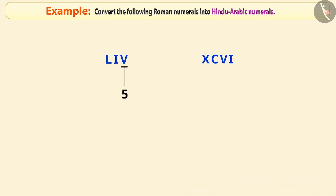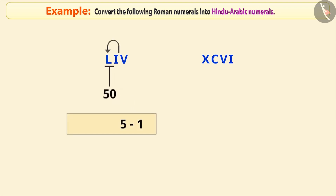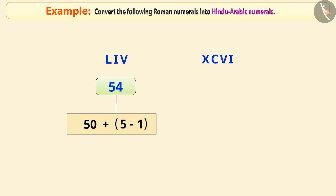This symbol represents 5 and the next symbol represents 1. Since this symbol is written before the symbol of larger value, it must be subtracted. The next symbol towards the left is of larger value, so it must be added. Therefore, the result is 54.